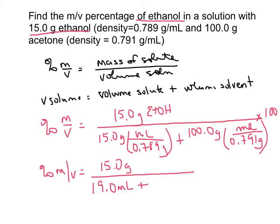Then I'm going to add to that my 100 grams divided by 0.791 from the acetone, and I get 126 milliliters there. Now I can add those two numbers together.